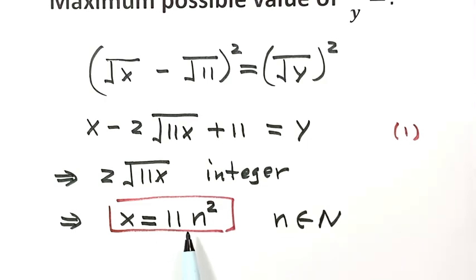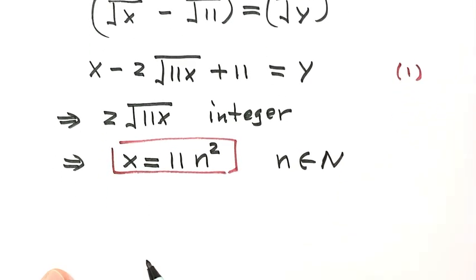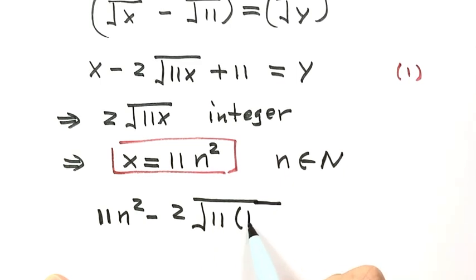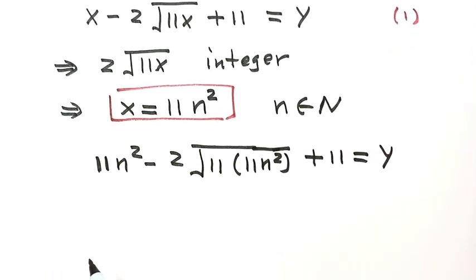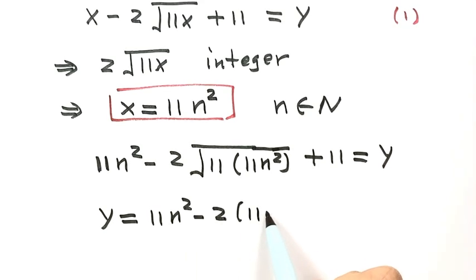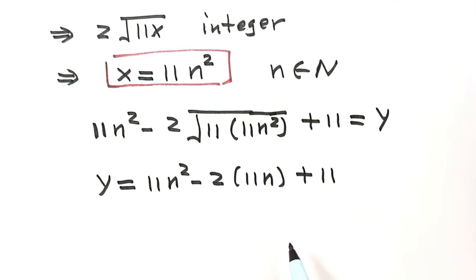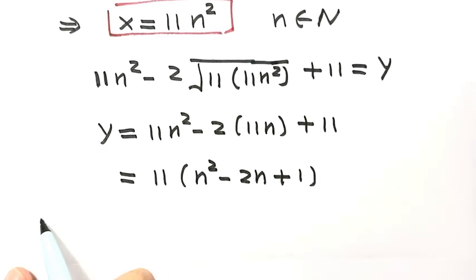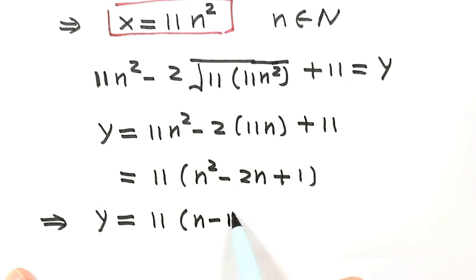Now let's substitute x = 11n² into the equation. We get 11n² minus 2 times the square root of 11 times 11n² plus 11, equals y. Simplifying, y equals 11n² minus 22n plus 11. Taking out the common factor 11, we have y equals 11 times (n² minus 2n plus 1), which is 11 times (n minus 1) squared.